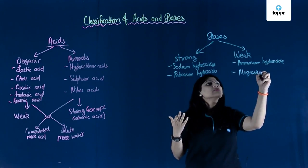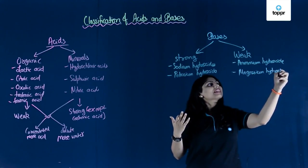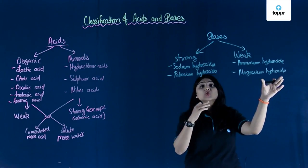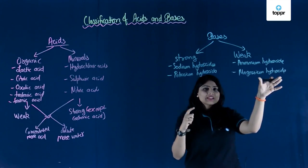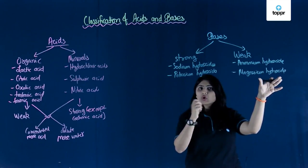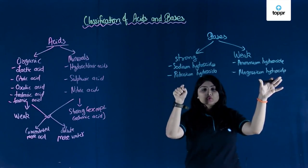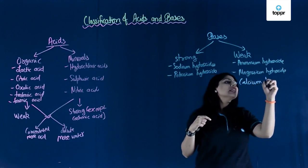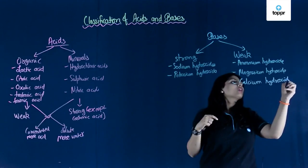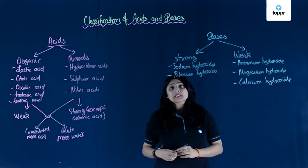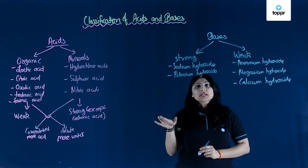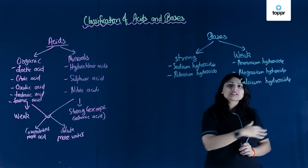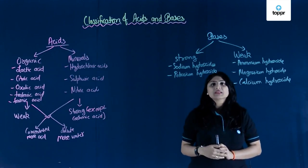What are antacids? We suffer from acidity sometimes, and to reduce the acidity we need a base — that base is magnesium hydroxide, which can be consumed. Since it can be consumed, it must be a mild base, because we cannot consume strong bases as they are very corrosive. The third weak base is calcium hydroxide, known as 'chuna' in Hindi. It is used for treating soil — if the soil becomes very acidic, we treat it with calcium hydroxide to make it neutral for plant growth.